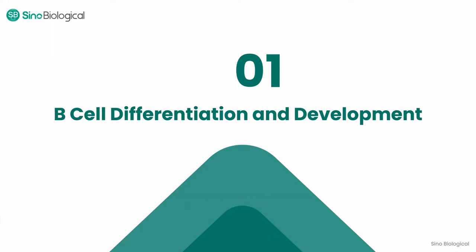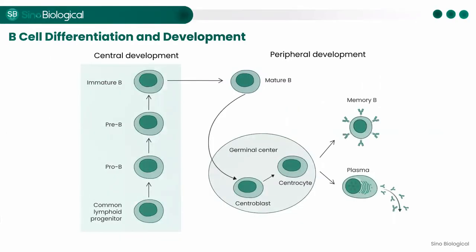B-cells are the only immune cells in the body that can produce antibodies. B-cell differentiation and development occurs in two distinctive stages. Development in the central immune organs can be described as the following sequential process: common lymphoid progenitor cells to pro-B cells to pre-B cells, followed by immature B-cells and then mature B-cells. This process depends on the bone marrow microenvironment and involves gene arrangement, BCR expression, and negative selection.